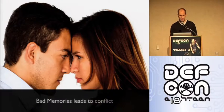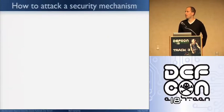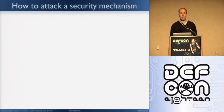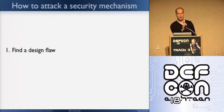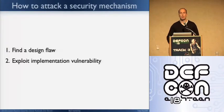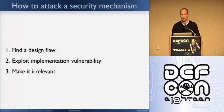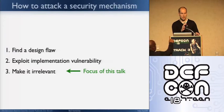Usually, for security, there are three ways we can know how to break a security mechanism. The first one is when you find a design flaw — for instance, the web is broken by design. You also have the most well-known way, which is finding exploits and vulnerabilities in the code — the implementation. And the third one, which will be the focus of this talk, is how you can try to make a security mechanism a little bit irrelevant.